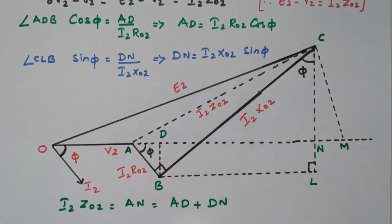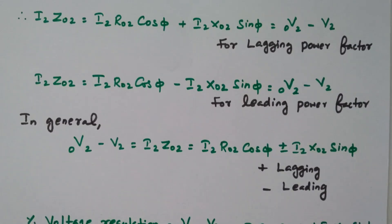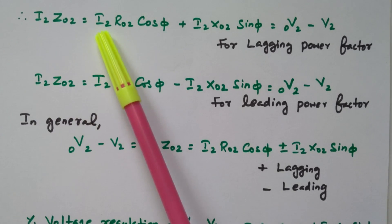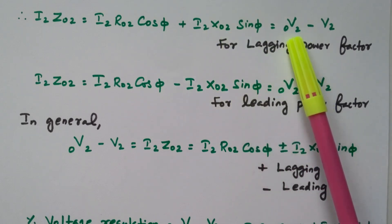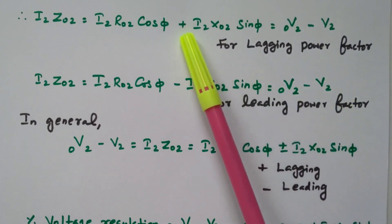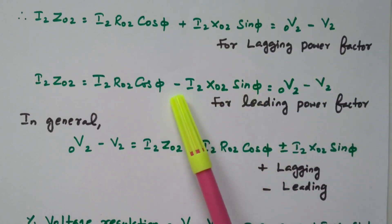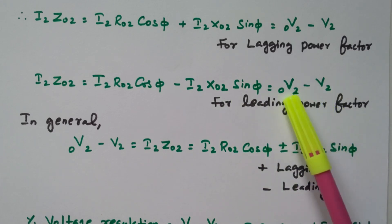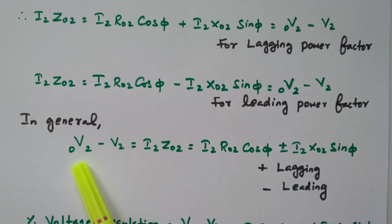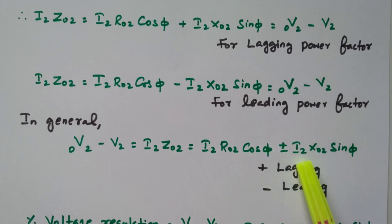Now we can write the expression for regulation. I2·Z02 equals I2·R02·cos φ plus I2·X02·sin φ, and this equals the no-load secondary voltage minus the full-load secondary voltage. The plus sign applies for lagging power factor; for leading power factor it is minus I2·R02·cos φ minus I2·X02·sin φ. In general, the regulation is I2·R02·cos φ ± I2·X02·sin φ, where plus represents lagging and minus represents leading.